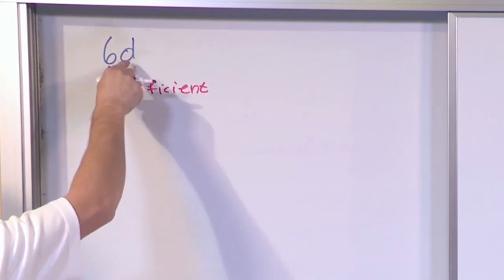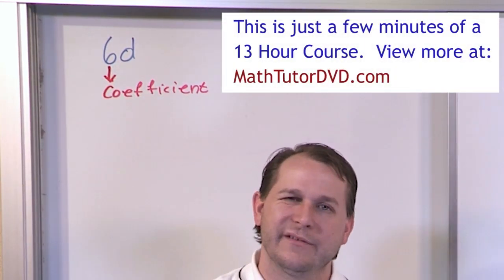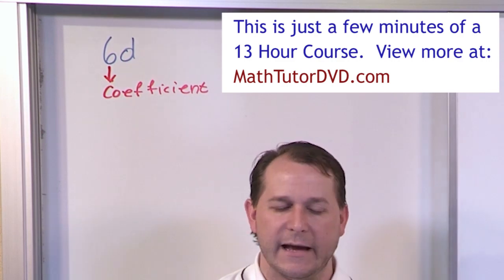So anytime you have a number sitting out in front of letters, which you're going to see a lot in algebra, the number is called the coefficient.